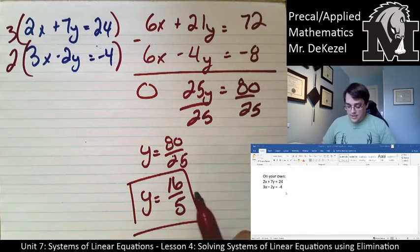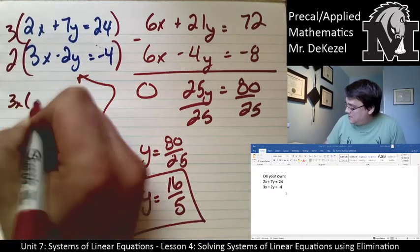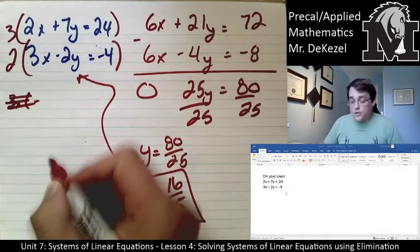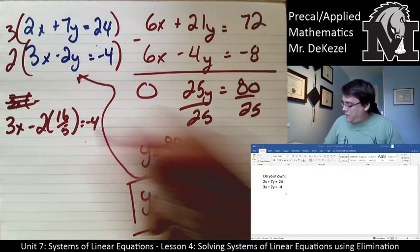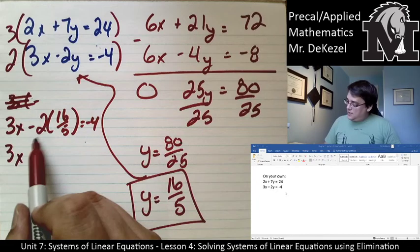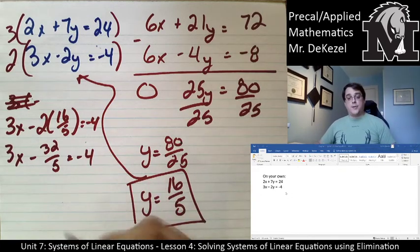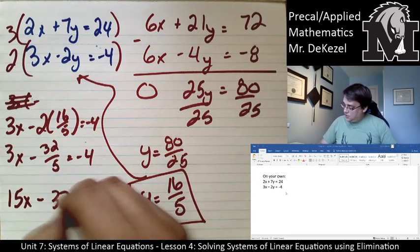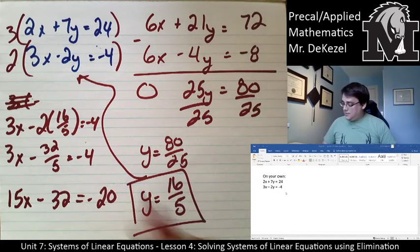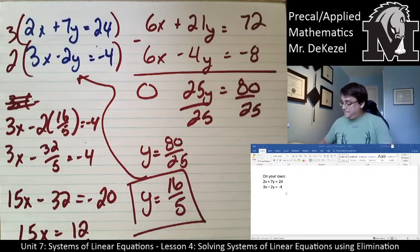I take y = 16/5 and plug it into the bottom equation: 3x − 2(16/5) = −4, so 3x − 32/5 = −4. Multiplying everything by 5: 15x − 32 = −20. Adding 32 to both sides: 15x = 12.